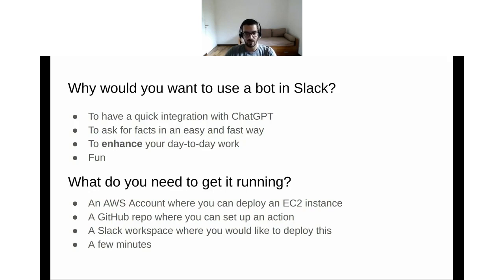So, why do you need to get it running? You'll need an AWS account where you can deploy an EC2 instance, a GitHub repo where you can set up an action, and a Slack workspace where you would like to deploy this. And, of course, as usual, a few minutes of your time.